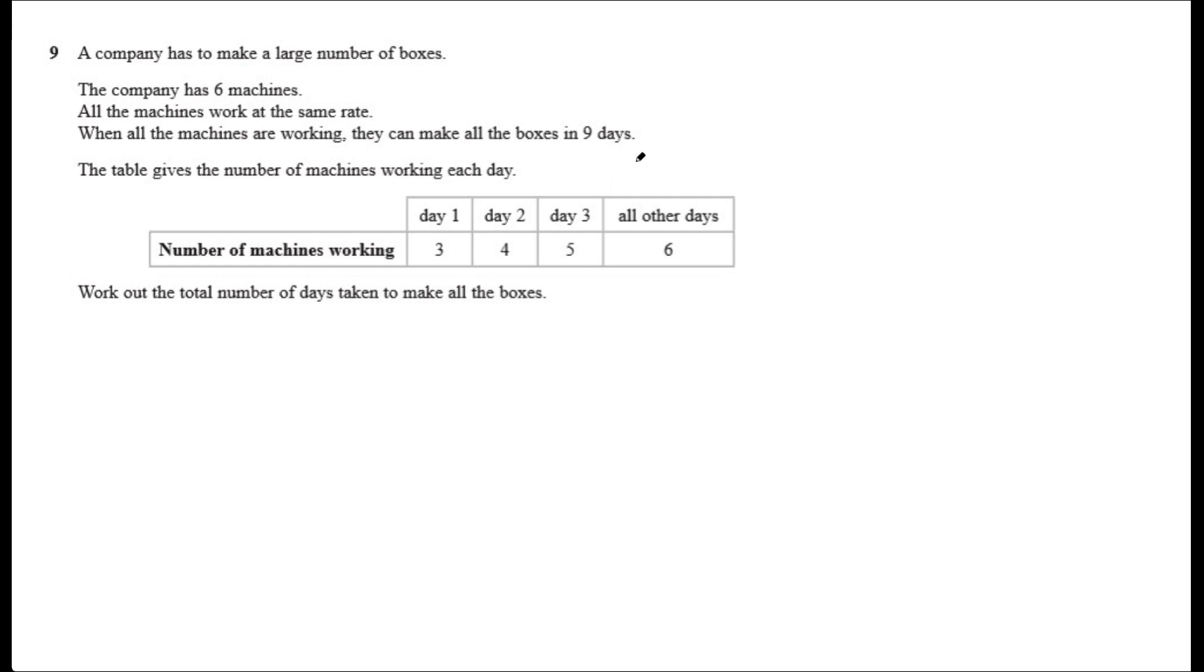The table gives the number of machines working each day. So the number of machines working on day 1 is 3, day 2 is 4, day 3 is 5, and all the other days there are six machines working. We need to work out the total number of days taken to make all of the boxes.